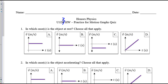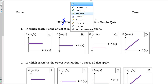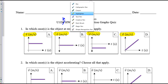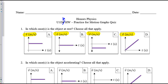Let's work through this practice from Unit 1, Day 7. The first thing you want to notice for every problem is whether you're looking at a velocity graph or a position graph, because the rules are totally different. This is a velocity graph.